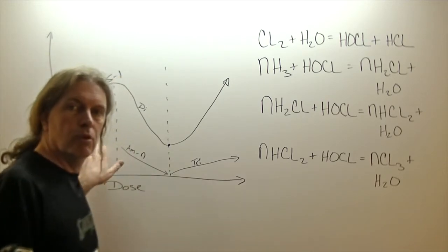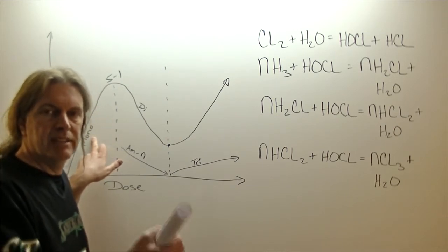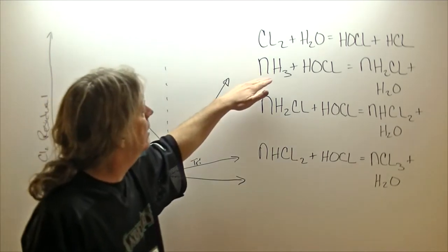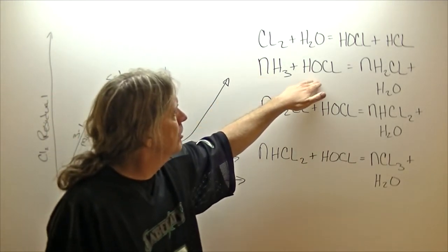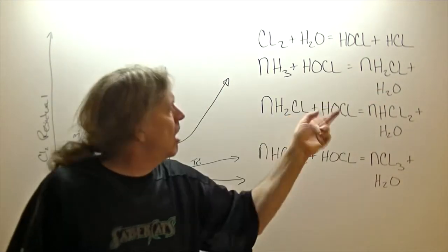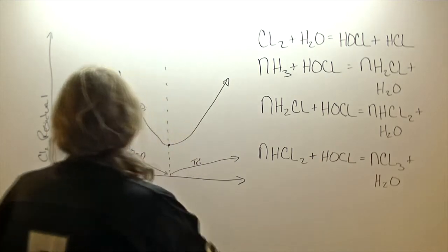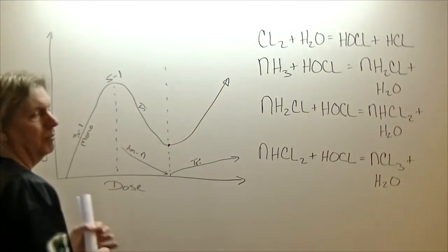Monochloramines are a type of chloramine that is the most stable and it has the highest disinfectant ability. So when we take our ammonia and add it to our hypochlorous acid, we are creating a chloramine, we are creating a monochloramine and a water molecule. And as we go up, here we go, boom, boom, boom, boom, boom, we're creating monochloramines.